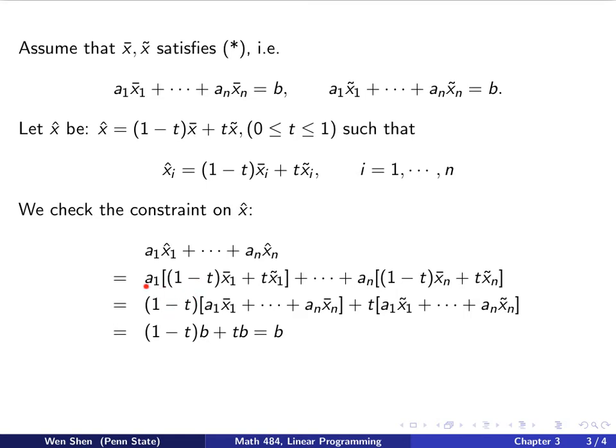So 1 minus t is the first one in each of these terms. So we have 1 minus t, and then for the first one I get a_1 x_1-bar, and then a_2 x_2-bar, all the way to the last one, a_n x_n-bar, which is here. And we do the same thing for the terms containing t. So we take the common t out, and then we get a_1 x_1-tilde as the first term, all the way to the last term, a_n and x-tilde n. Now, we see that what's in this bracket here is exactly the left-hand side here, and we know that equals b. So this bracket equals b, and then this bracket is exactly here, and also equals b. So if this is 1 minus t b plus tb, negative t cancels negative t, I get b. So the constraint is satisfied for x-hat.